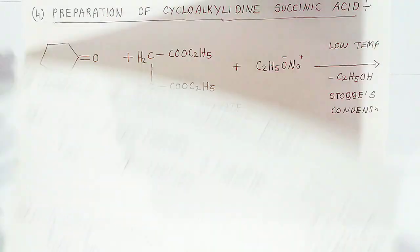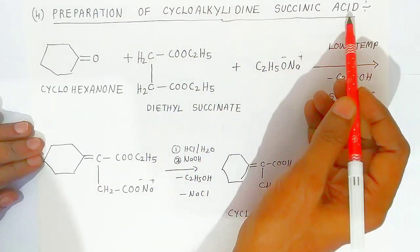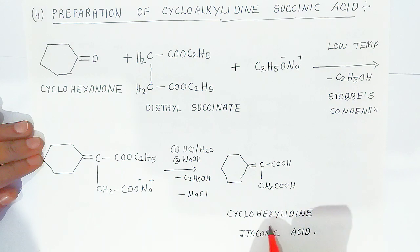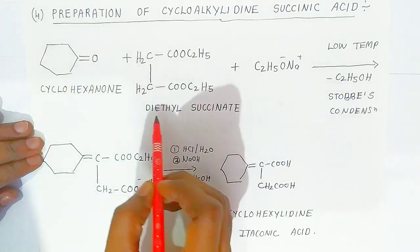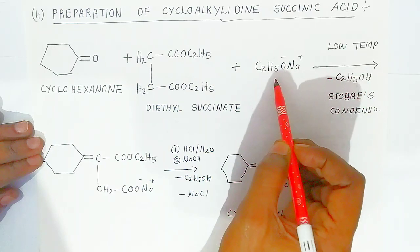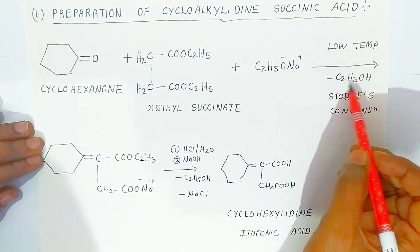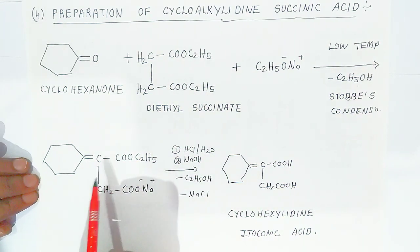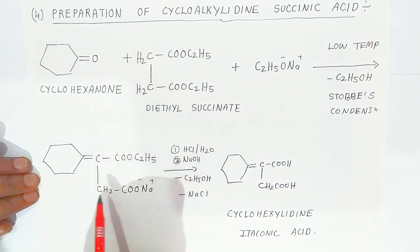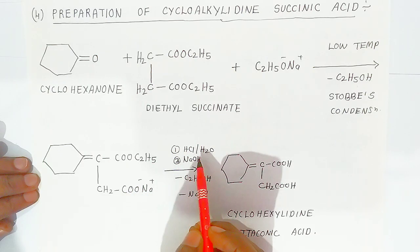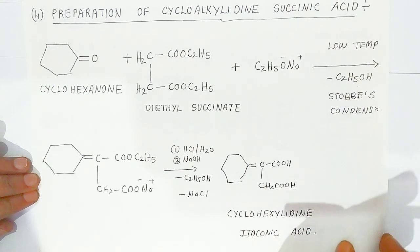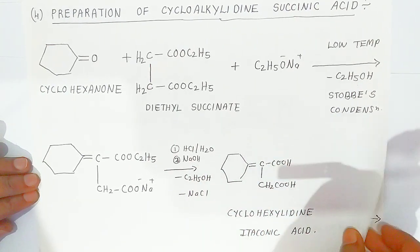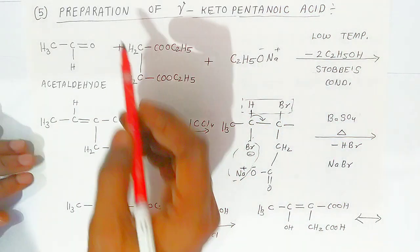The fourth application is preparation of cycloalkylidene succinic acid, specifically cyclohexylidene itaconic acid. Cyclohexanone reacts with diethyl succinate in presence of sodium ethoxide as base at low temperature, with elimination of alcohol. The Stobbe condensation takes place, forming the sodium salt. Upon hydrolysis with acidic water, cyclohexylidene itaconic acid is obtained by elimination of alcohol and NaCl.